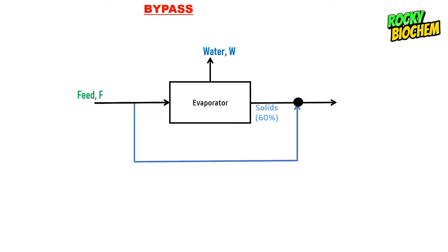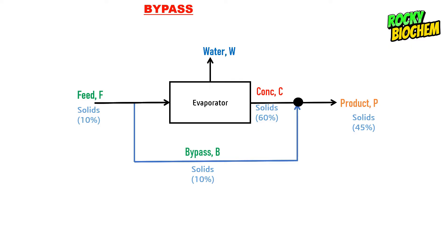In a bypass evaporator system, we bypass a proportion of the feed and evaporate only a selected portion. After evaporating that portion to obtain the concentrate, we mix it with the bypass fraction to form the final product. This is how we overcome the problem whereby direct evaporation produces an undesirable product. The bypassed feed meets the concentrate at a mixing point to form the final product.